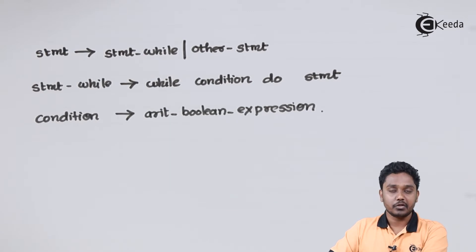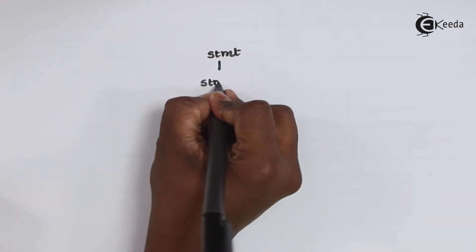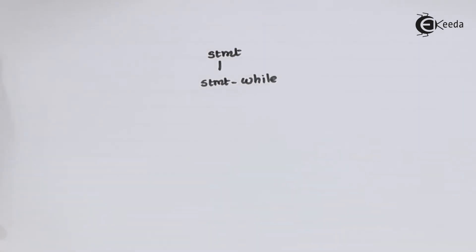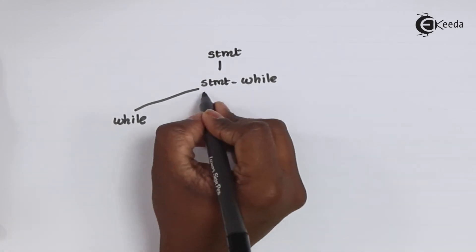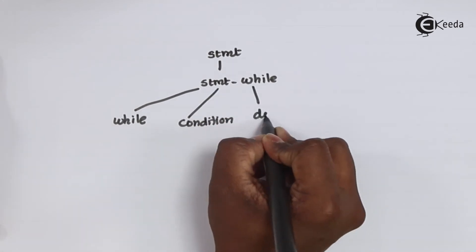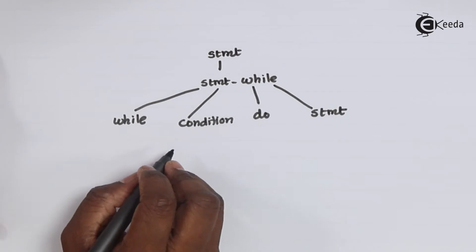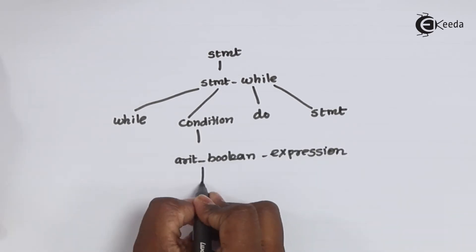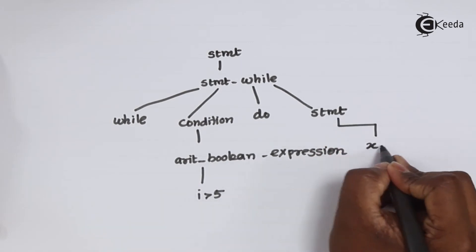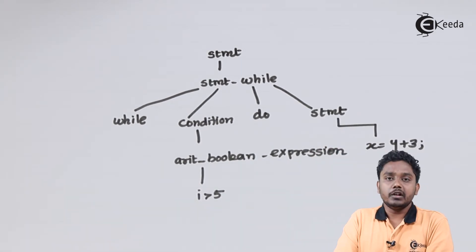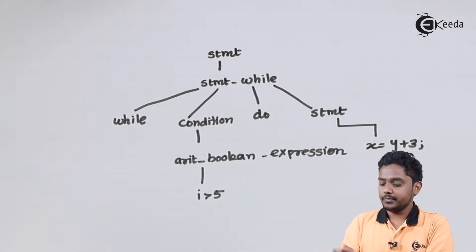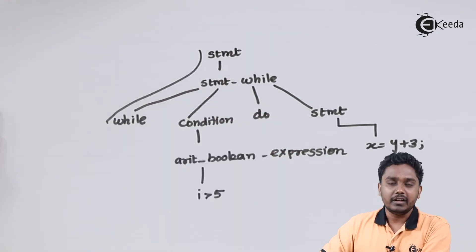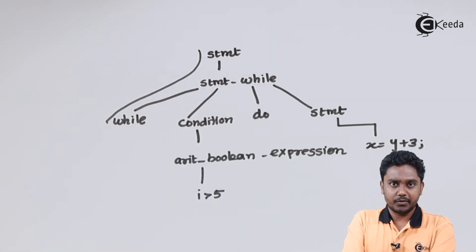Now let us try to parse the string that we have generated using this particular grammar. Let us try to draw the yield of this parse tree and let us check whether the program could be parsed using this parse tree or not. It is containing a while. Let us try to see the yield of this parse tree.